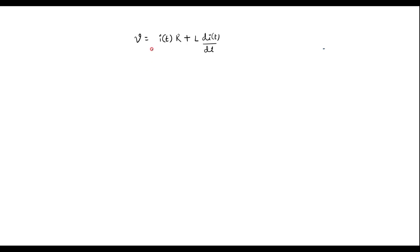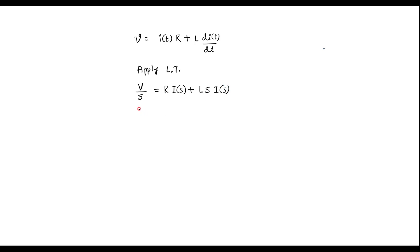Let me apply Laplace transform to this equation. I can write V/s — V is constant — is equal to R·I(s) plus L·s·I(s). Now let me simplify: V/s is equal to, taking I(s) as a common factor, I(s) into (R plus Ls).